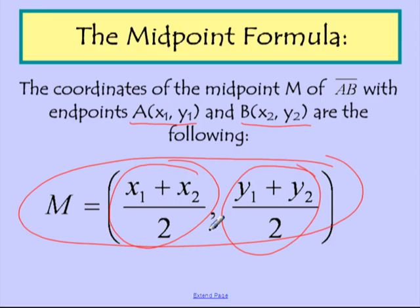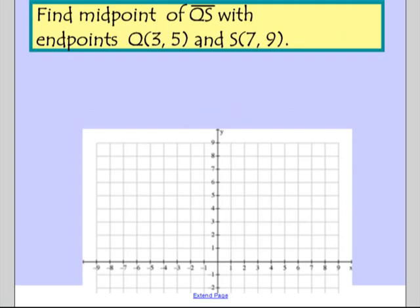Easiest way, I think, to remember this is this is just the average of the two x values, right? Add them up and divide by two. And this is just the average of the two y values. Add them up and divide by two. All right, let's do an example.